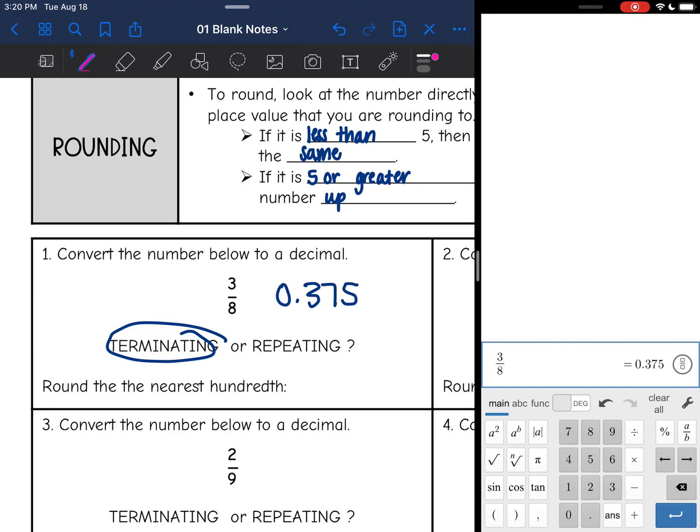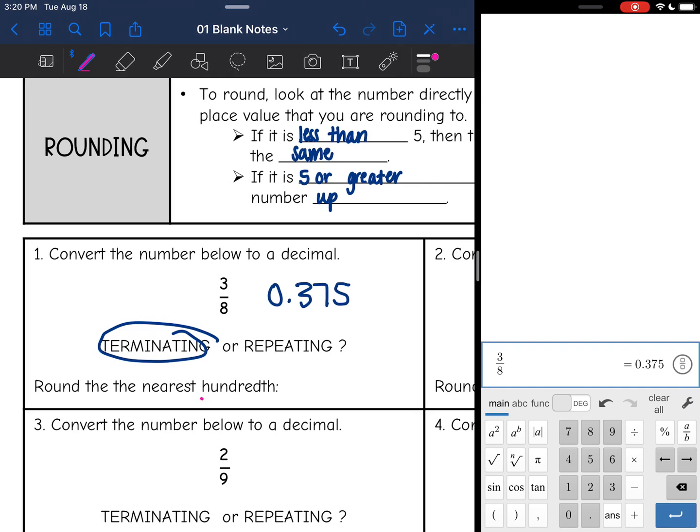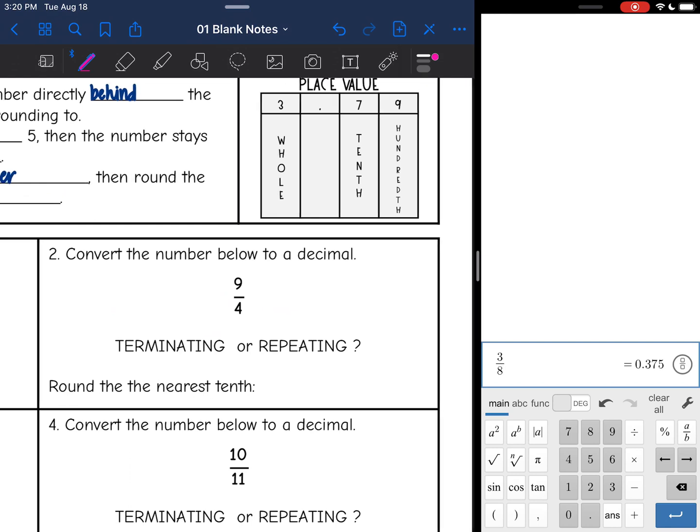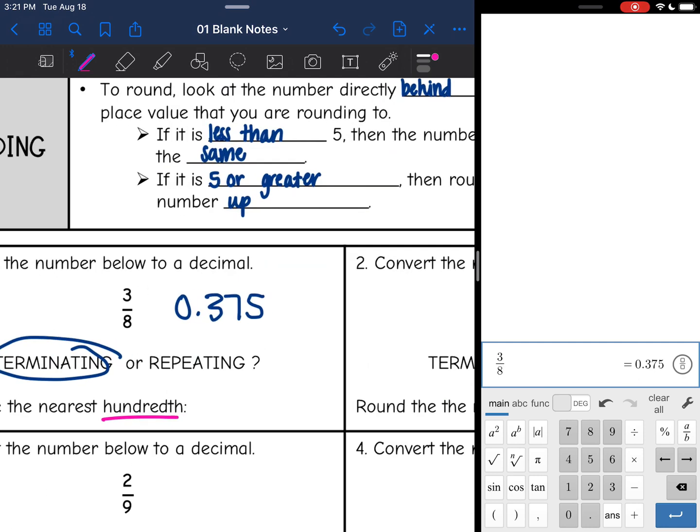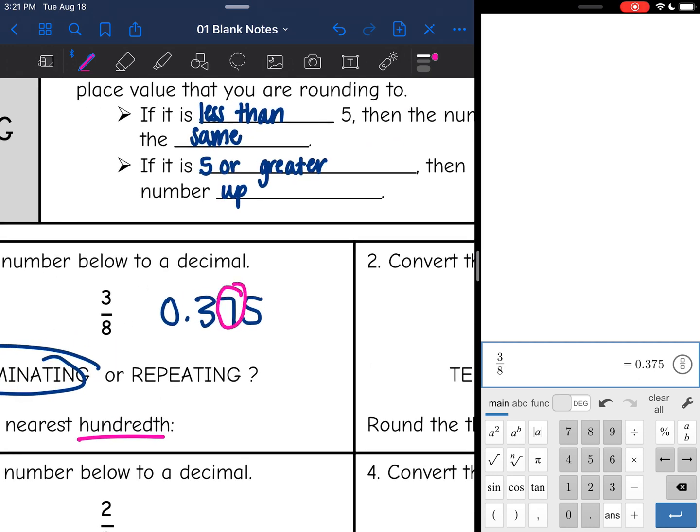0.375. And I need to round to the nearest hundredths. If you forget, you can look up here at our place value. Hundredths is the second number. So that means I'm rounding to this place right here. And the number after it is 5, so that means I need to round the 7 up. So 0.375 round to the nearest hundredth is 0.38.